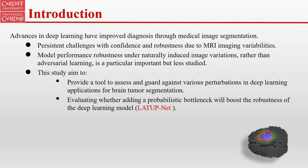Testing model robustness under naturally induced image variation is crucial. It remains unexplored compared to adversarial learning approaches. Motivated by the challenge of enhancing the robustness of deep neural network decisions against variable noise in MRI-based brain tumor segmentation.